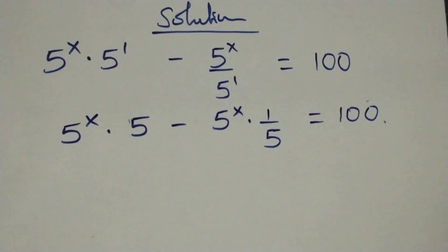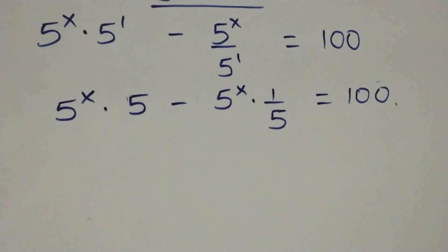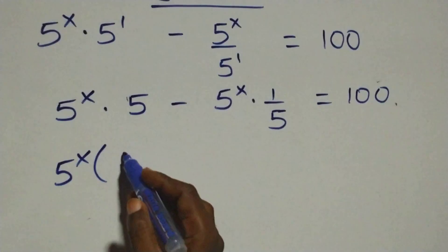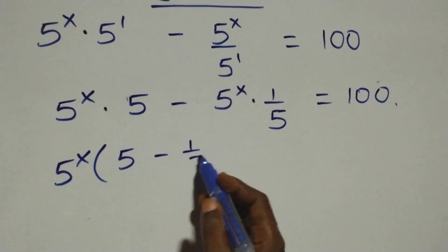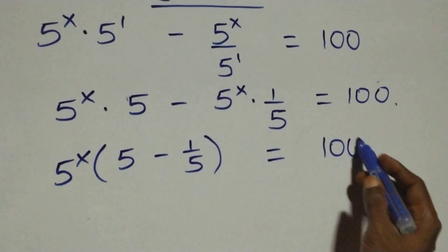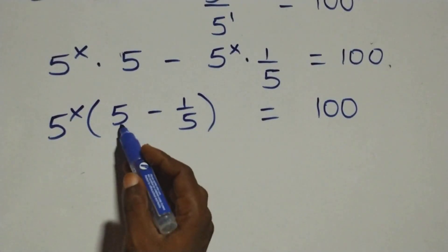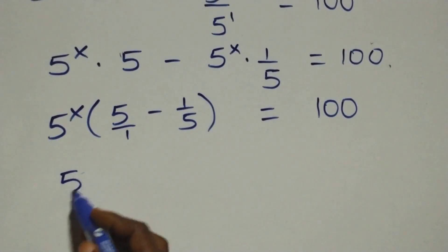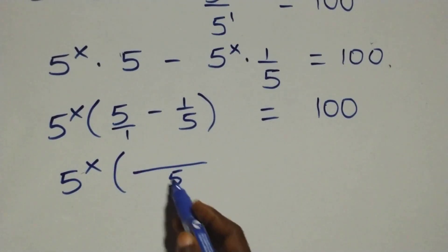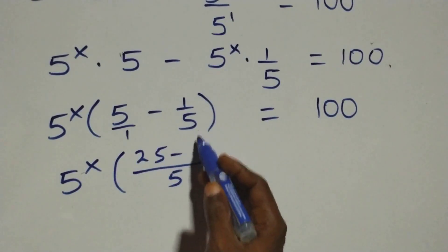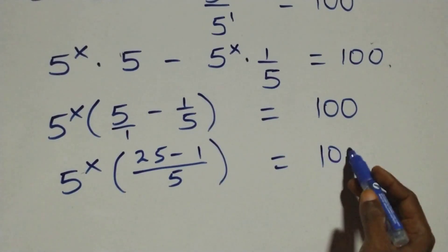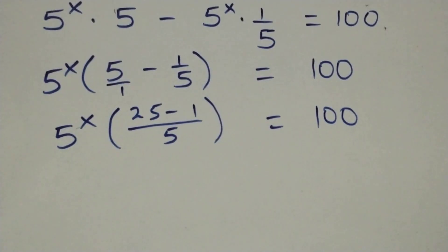From here, we factor out 5 raised to power x. We have 5 raised to power x in brackets: 5 minus 1 over 5, close brackets, equals the right-hand side. We bring this together as one fraction — 5 over 1 — so 5 times 5 is 25, minus 1 times 1 is 1, close brackets.